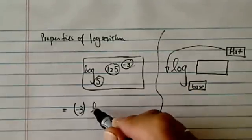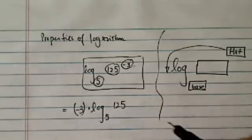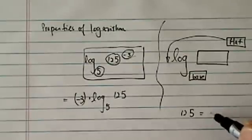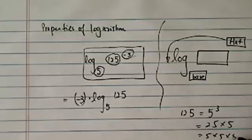So, minus 3, and then becomes multiplication. Log the base of 5, 125. I'm going to rewrite 125 as 5 cubed, because that's 25 times 5, which is 5 times 5 times 5.